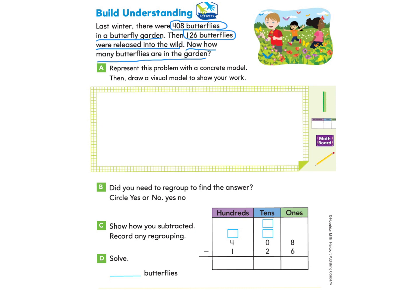First, we had 408 butterflies, and then 126 butterflies were released and let go. So we're going to subtract to find the amount of butterflies in the garden now. We're going to draw out the visual model. There are 4 hundreds in 408, there are 0 tens and 8 ones. So we won't draw any tens, but we will draw the 8 ones.